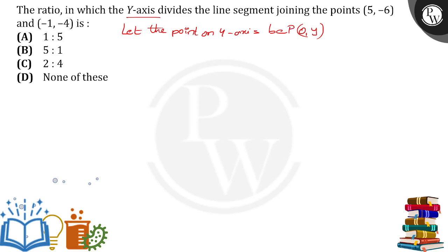So P 0 comma y divides the line joining points 5 comma minus 6 and minus 1 comma minus 4 in the ratio of m is to n. So that m is to n, we have to calculate now.